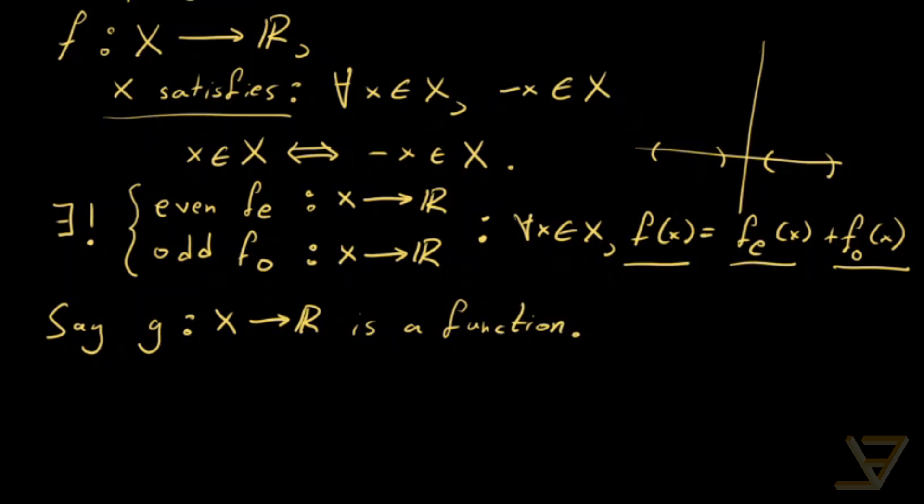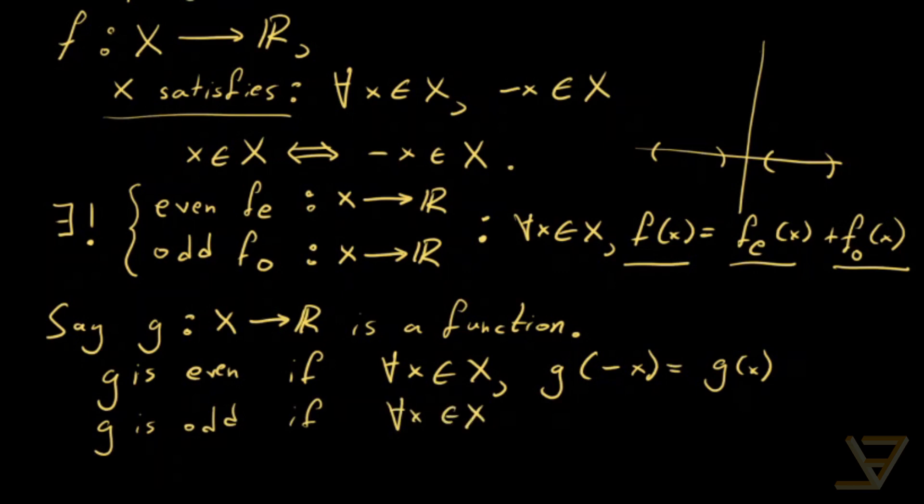Then g is even if for all x in X, g of negative x is equal to g of x, and g is odd if for all x in X, g of negative x is equal to negative g of x.